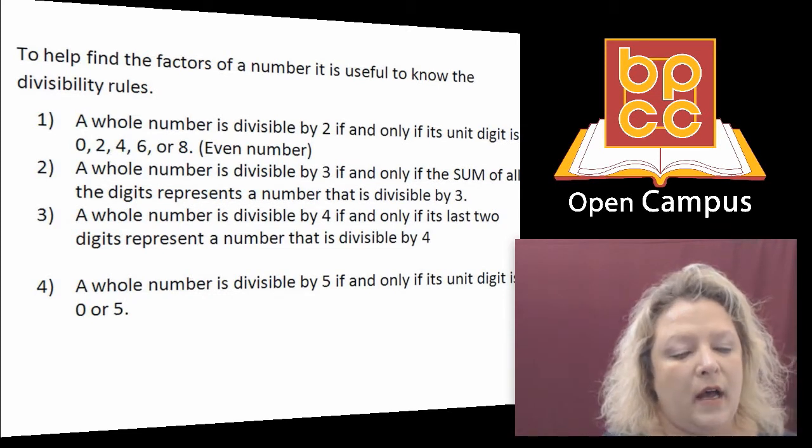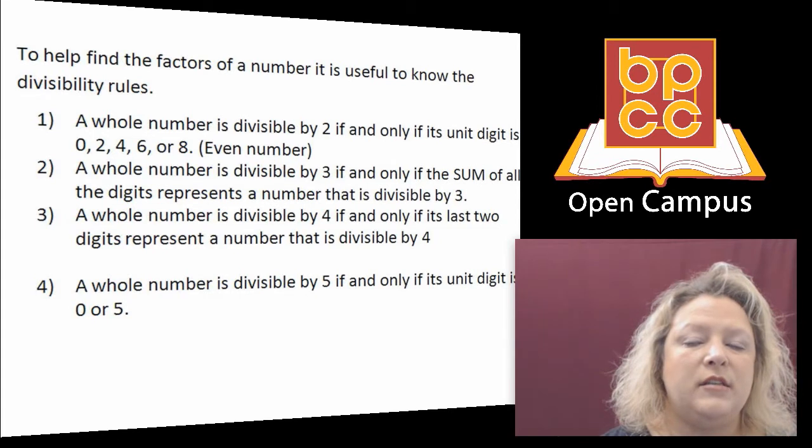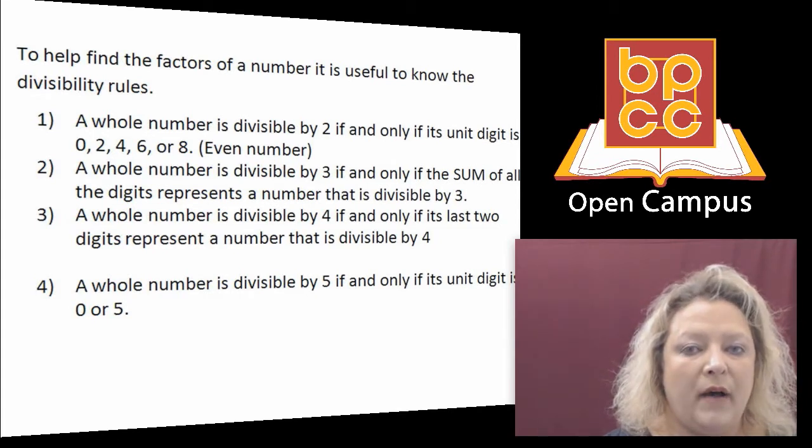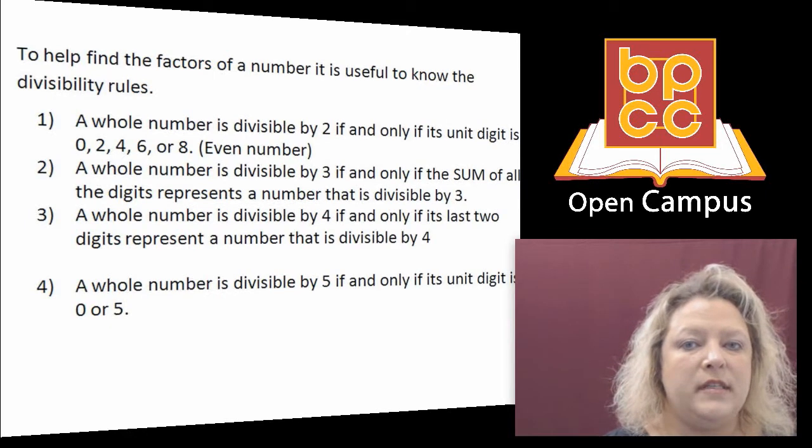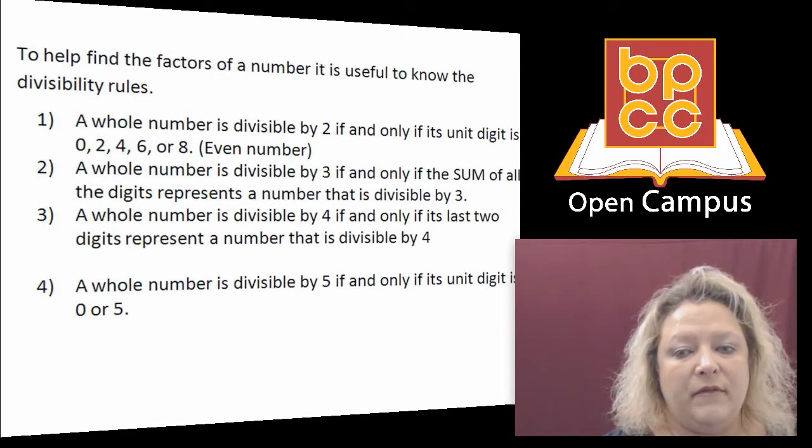4 is a little tricky. It only works if the last two digits of the number are divisible by 4, then the whole thing is divisible by 4. 5 is one of the easiest ones. It ends in a 5 or a 0, 5 divides into it.